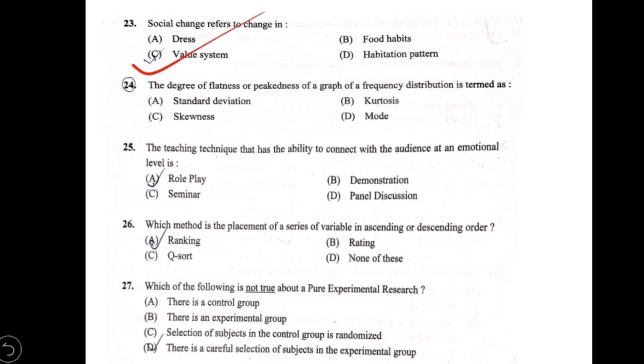The degree of flatness or peakedness of a graph of a frequency distribution is termed as — options include: D) habitation, skewness, kurtosis, and mode. The correct term is kurtosis.